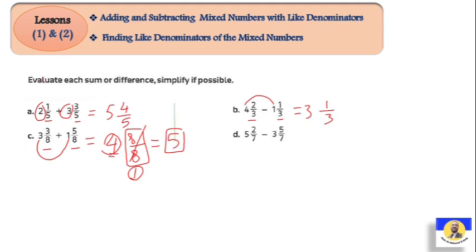Letter D: How can we make subtraction? We start first with the fraction: 2/7 minus 5/7. This can't work because 2 is smaller than 5. So we need to borrow. We borrow 1 from the whole number 5, so 5 becomes 4. When we borrow 1 from a mixed number, that 1 becomes equal to the denominator — like 7/7.